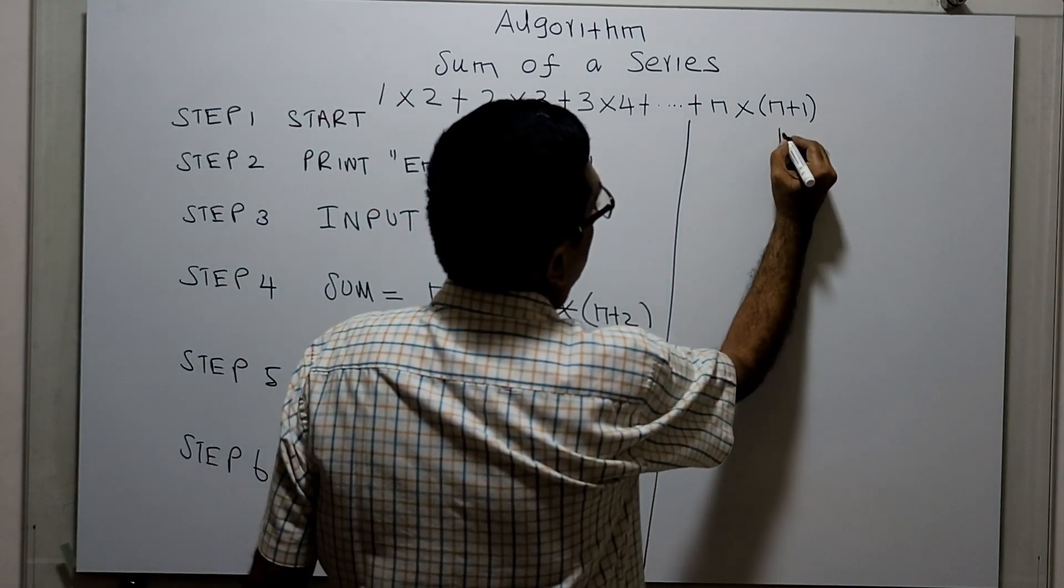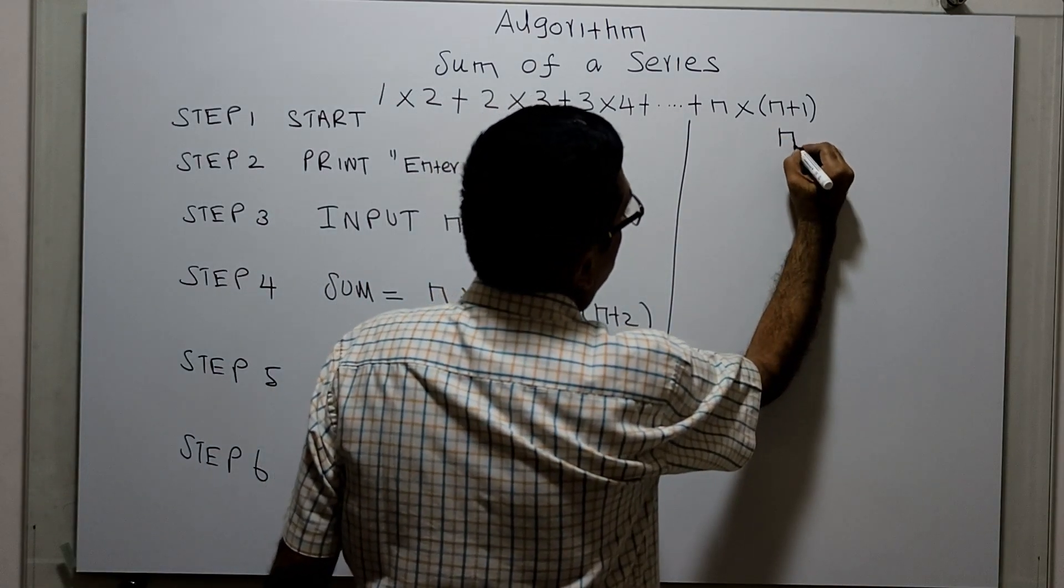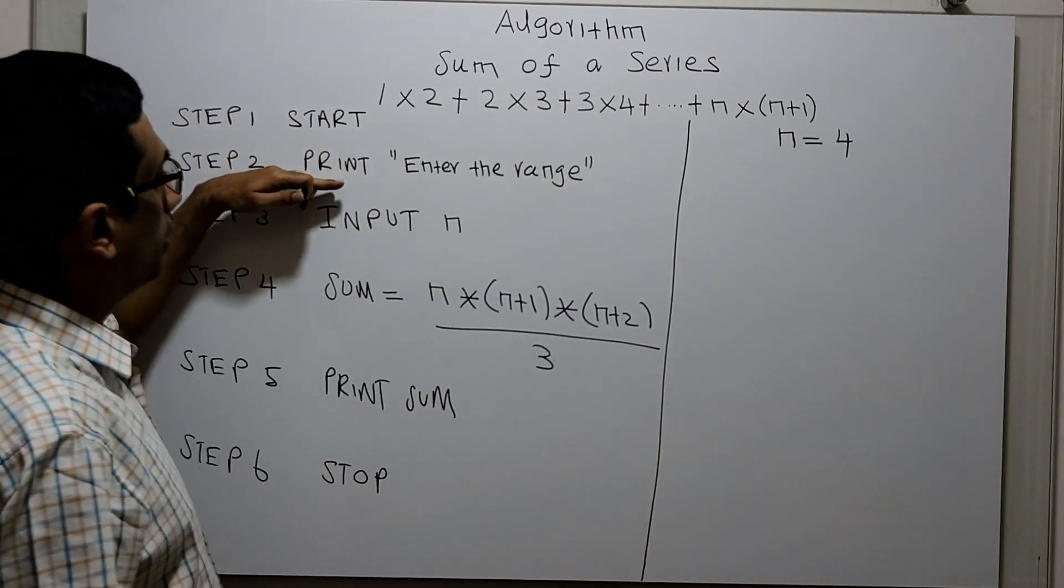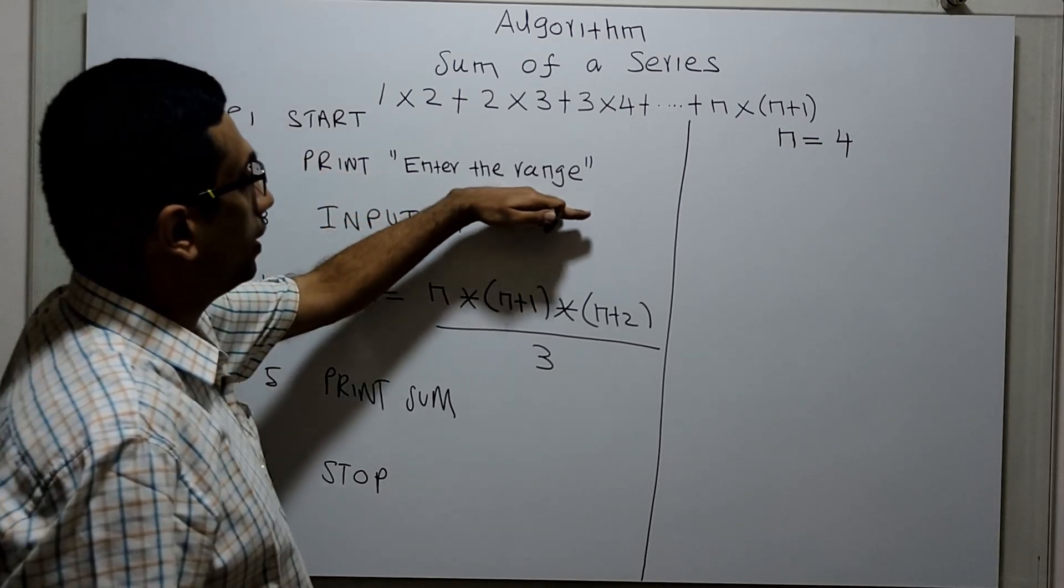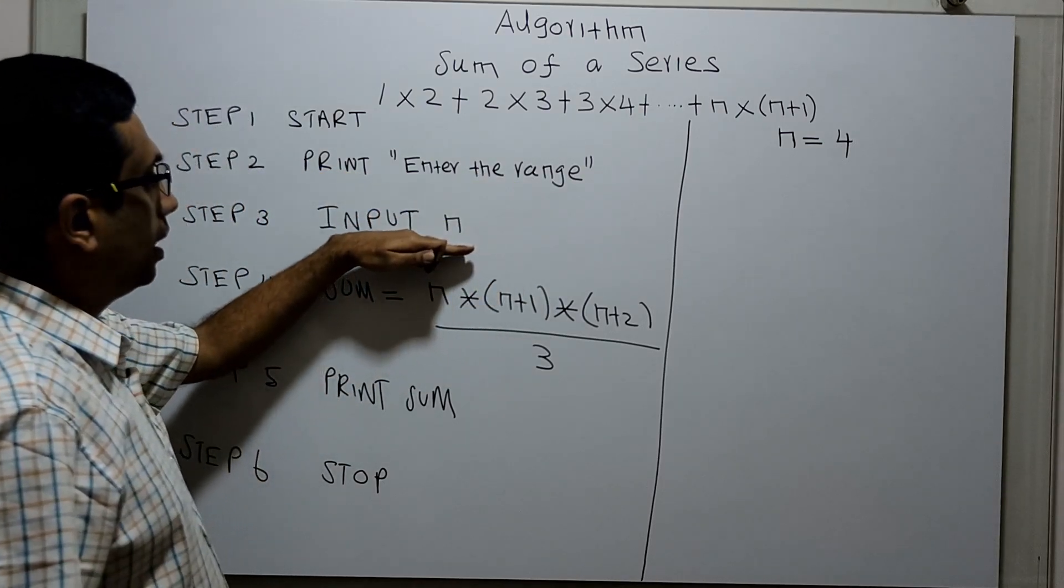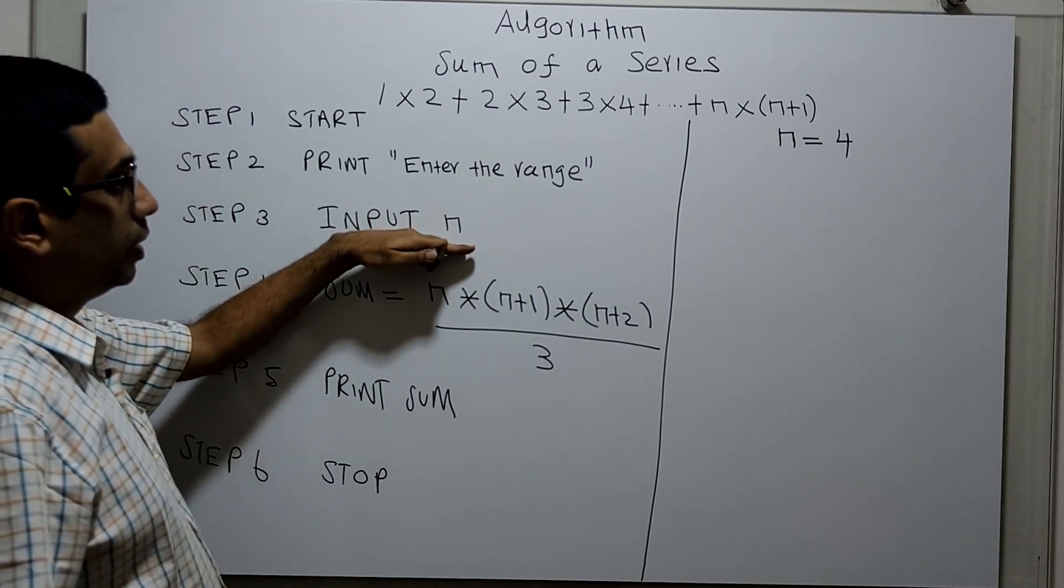Now, my input is 4. Start. Ask the user to print 'Enter the range'. For this, I am giving an input 4, n equals 4.